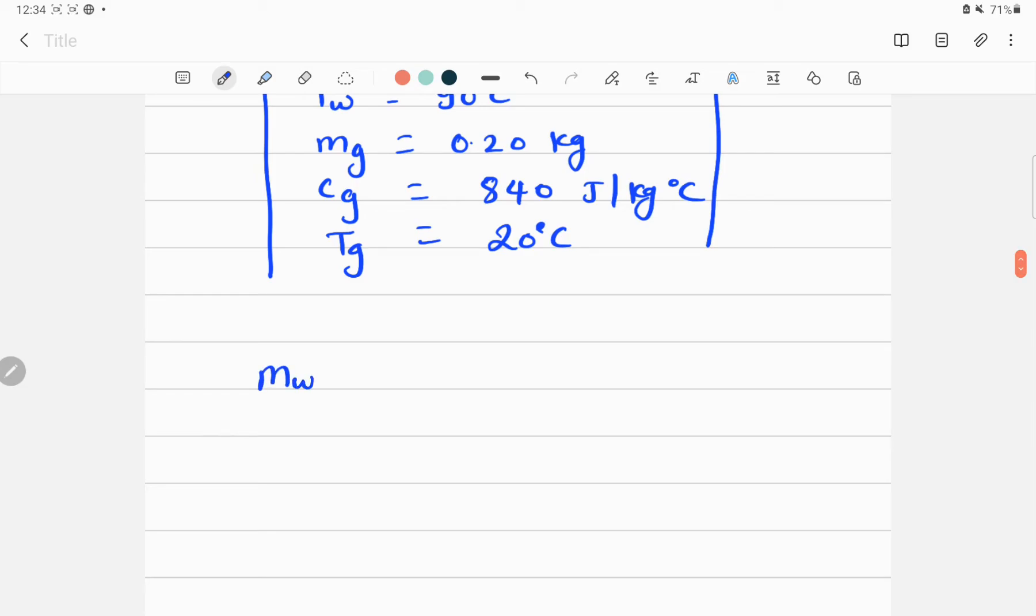So given all these information, I can rewrite the above equation like mw times cw times (T minus Tw), which is equal to mass of glass, specific heat capacity of glass, and final temperature minus temperature of the glass.